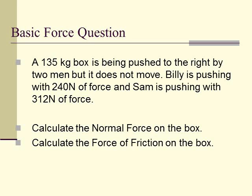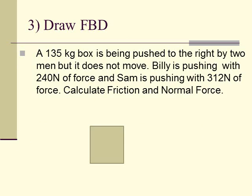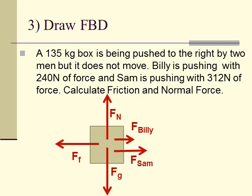A 135 kilogram box is being pushed to the right by two men but it does not move. Billy is pushing with 240 Newtons and Sam is pushing with 312 Newtons. We need to calculate the normal force on the box and the force of friction. After reading it, the object is not accelerating in any direction, so the net force in all directions should equal zero. Drawing the free body diagram: force of gravity downward, normal force up — those two are equal since it's not accelerating. There's a force of friction backwards and two forces forward from Billy and Sam.